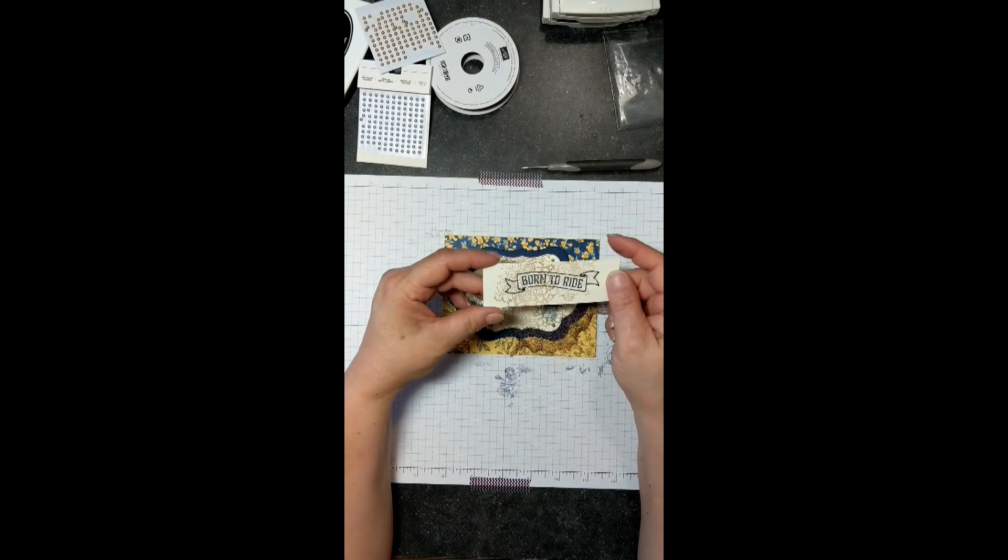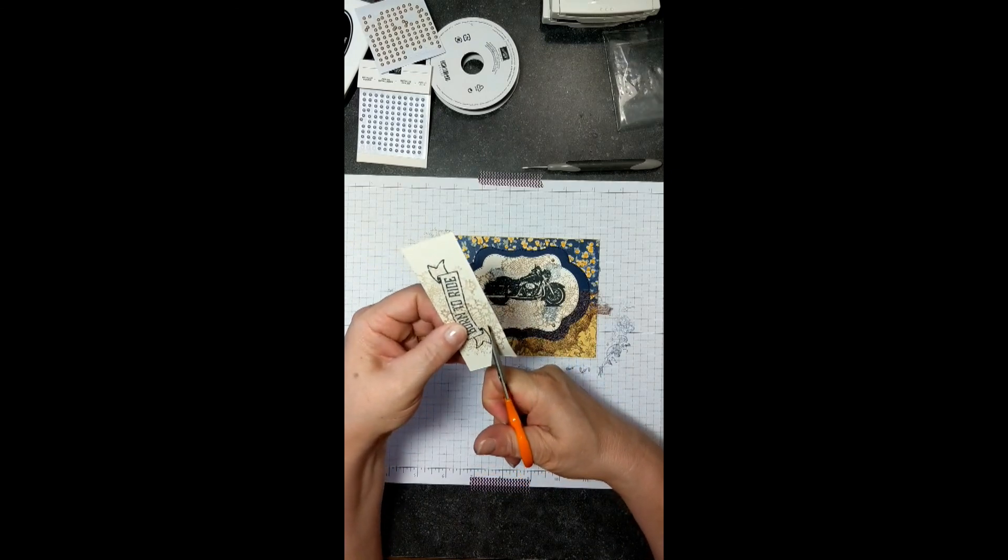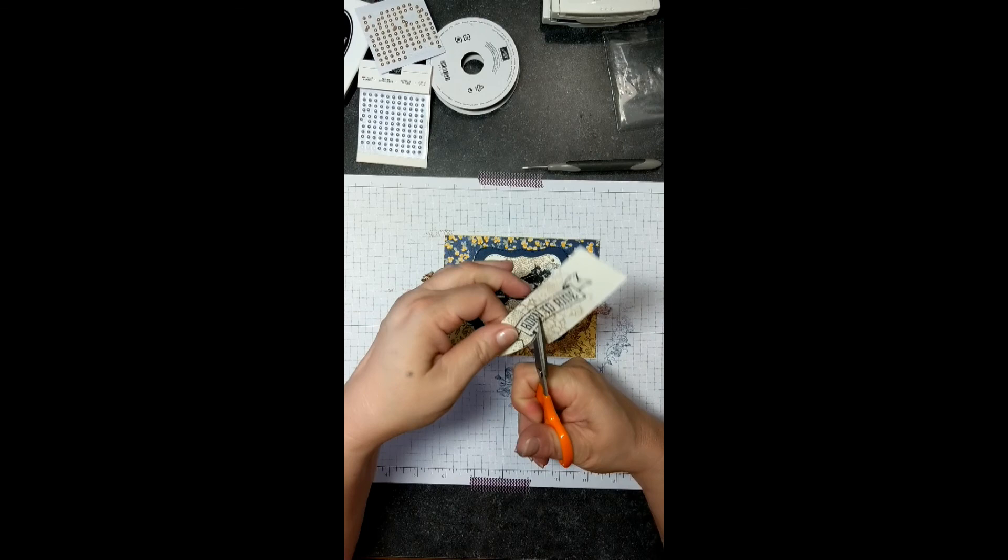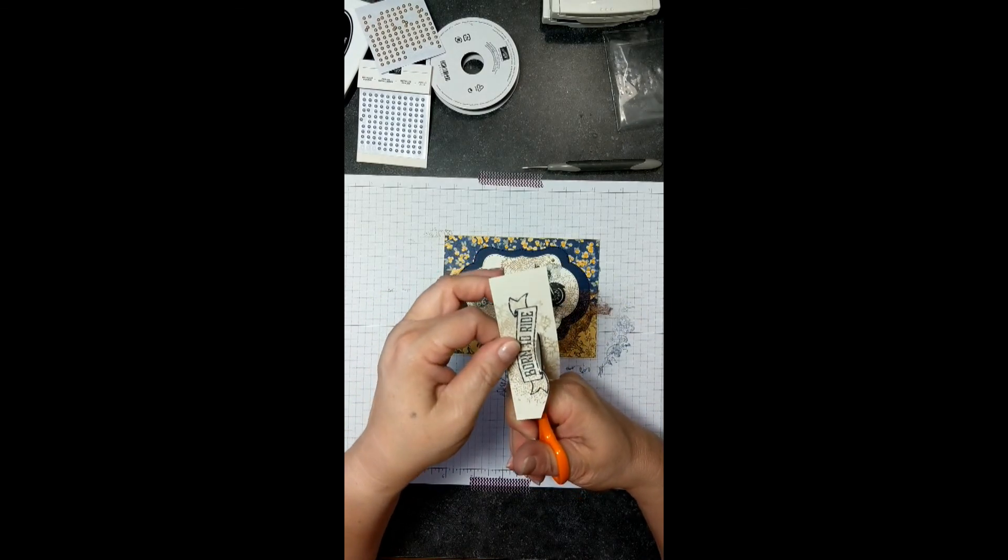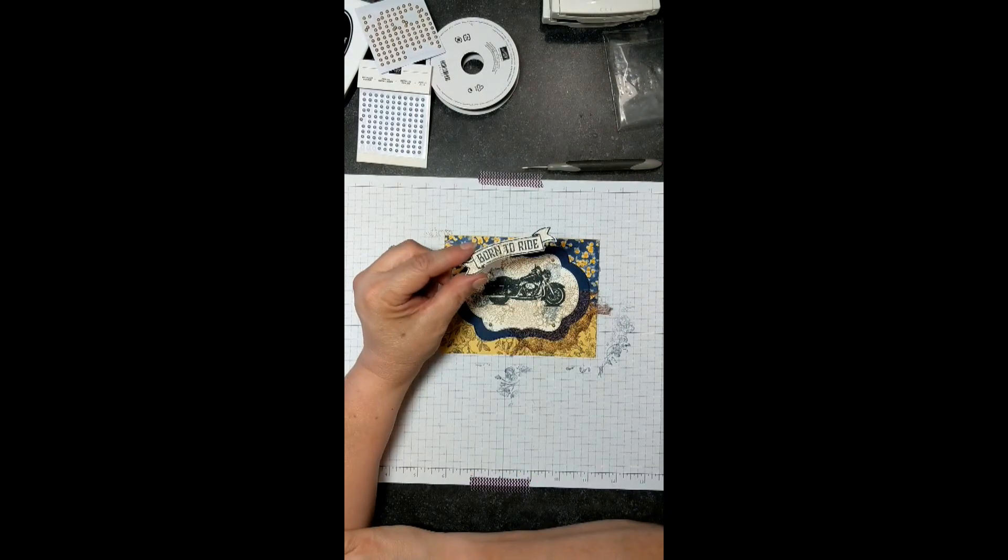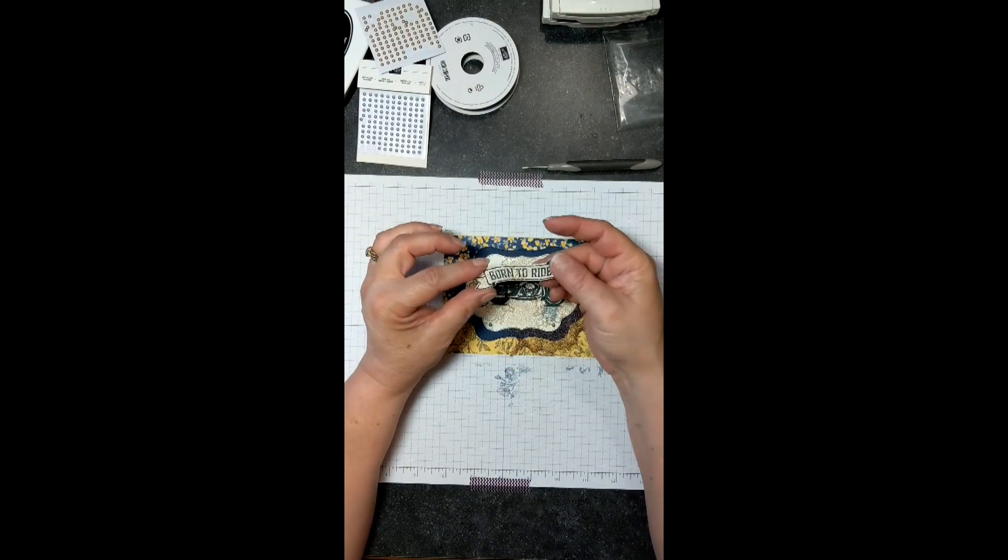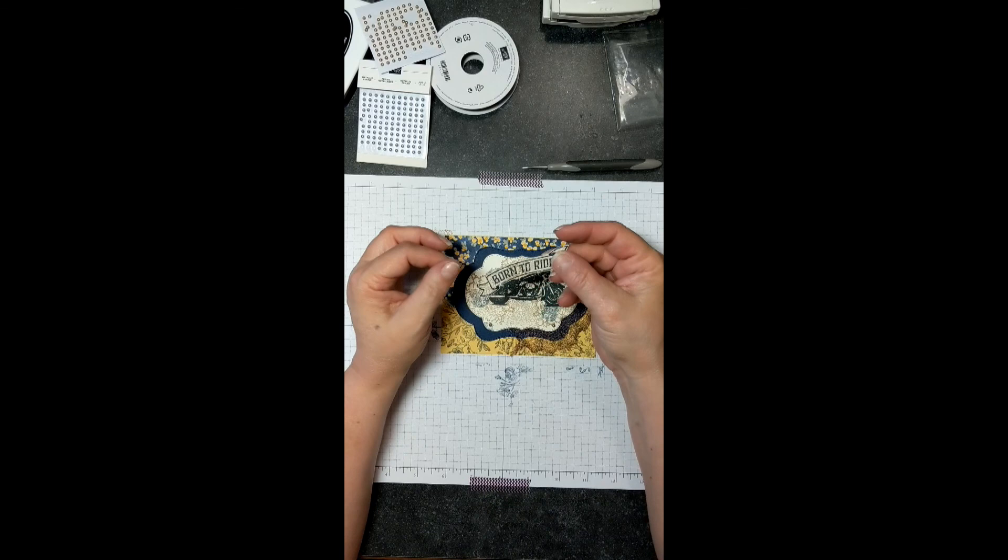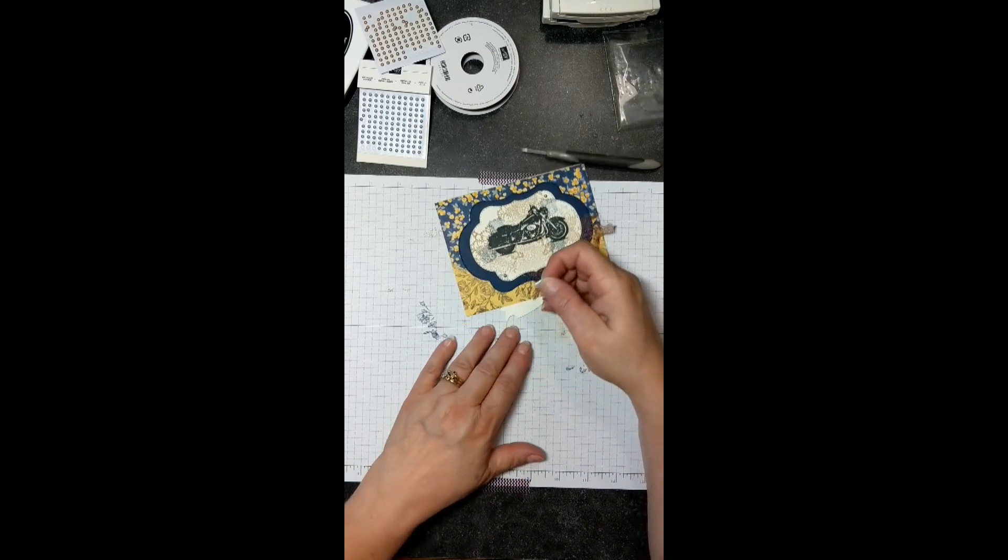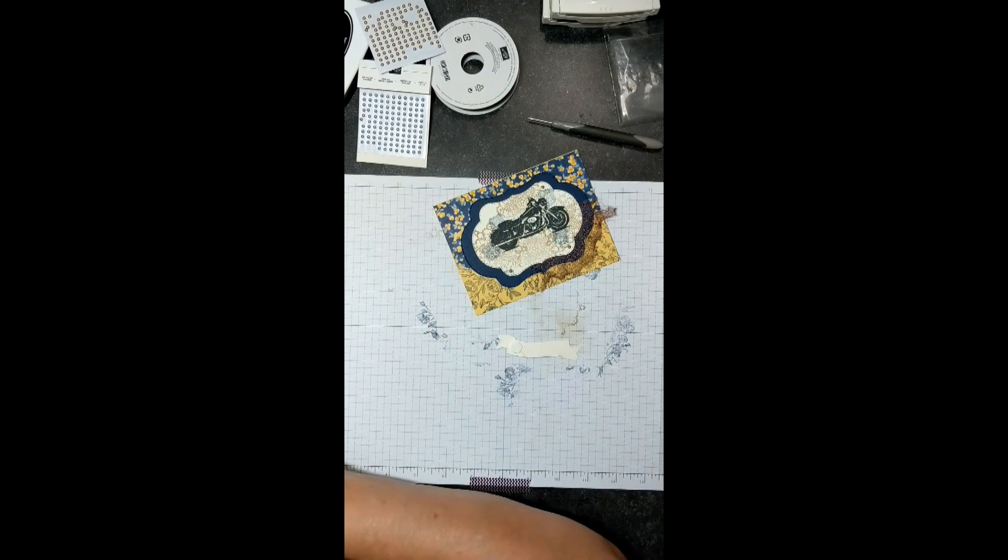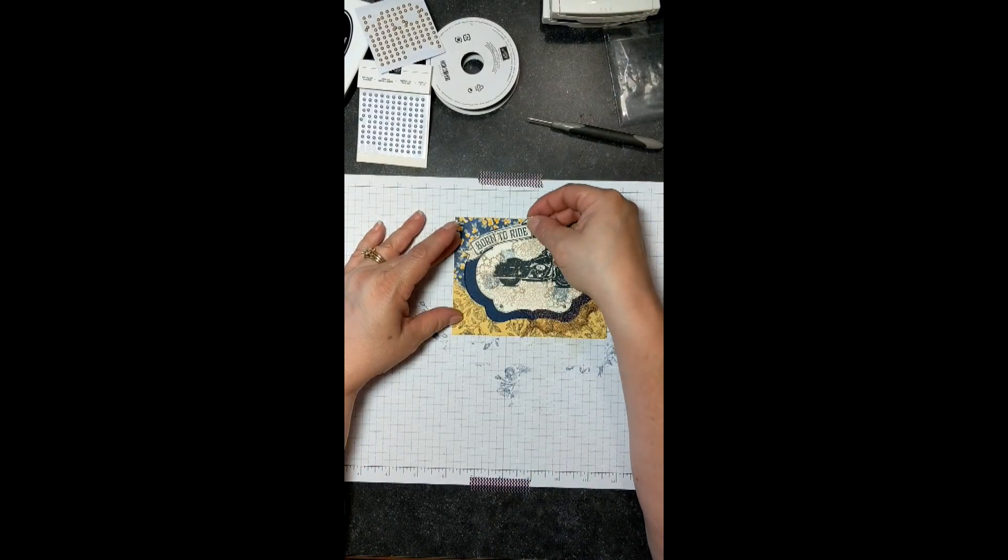And then I need to just take a moment and fussy cut this. It doesn't take long to fussy cut. One of my tips is move the paper, not your scissors. You will get much more control and a nicer cut. Here is our Born to Ride banner. You can see just a little bit of vintage in here. I'm going to use just a couple of Stampin' Dimensionals here and pop that off my card. And we will just set this right here in this corner.